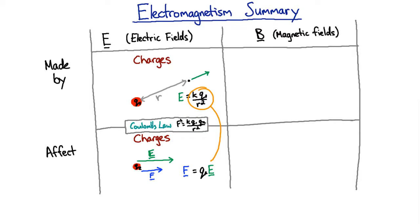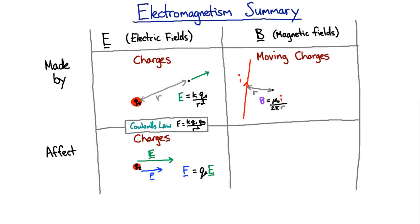What makes magnetic fields? The answer is moving charges. We saw that if we have an infinitely long wire carrying a current, then the magnetic field a distance R away has a strength given by a known formula. The direction is more complicated — you use the right-hand rule: put your right-hand thumb in the direction of the current, and your fingers point in the direction the magnetic field goes. In this case it goes into the page, denoted by a circle with a cross, which looks like the back of an arrow going into the page.